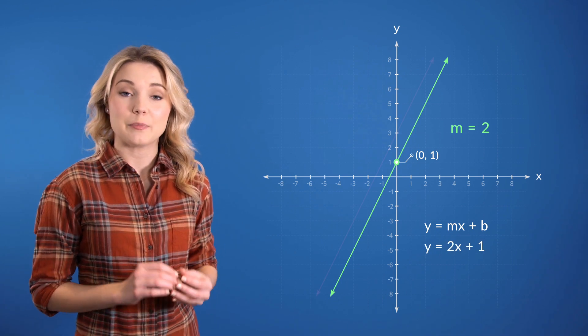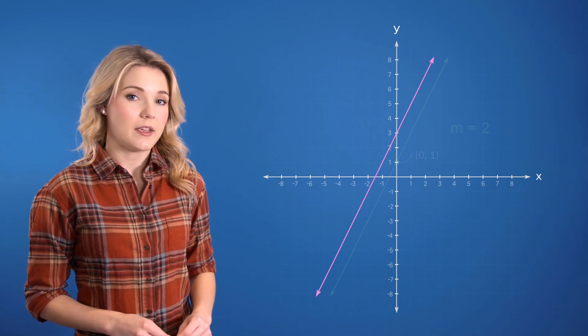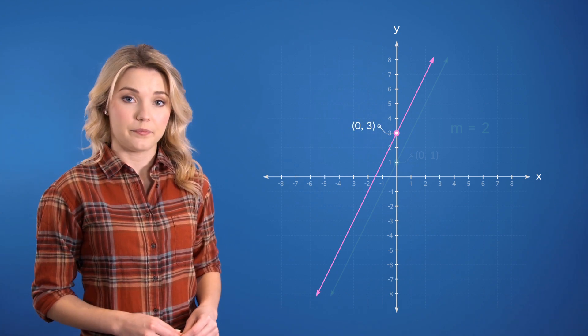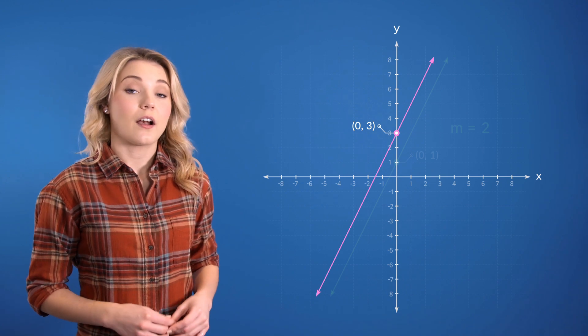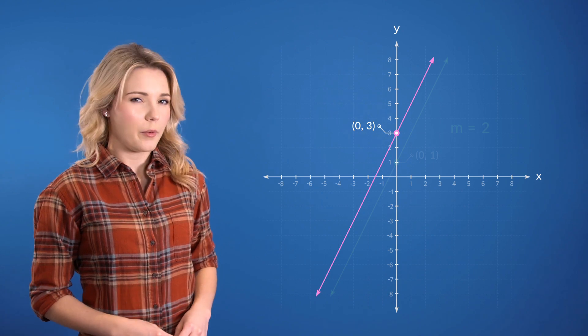Cool. Now, I want you to think about this parallel line. Notice how its y-intercept is sitting at (0, 3). This means that our y-intercept is 3. Good. And what would our slope be?